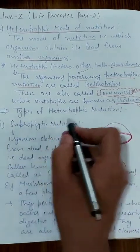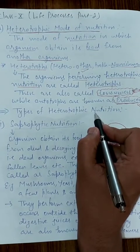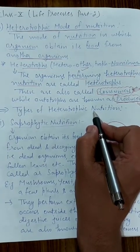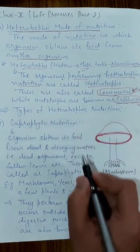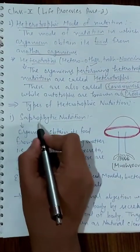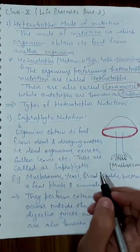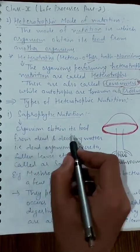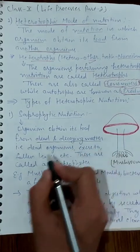Now, types of heterotrophic nutrition. There are no further types in the autotrophic mode of nutrition, but heterotrophic mode of nutrition can be of many types. The first type is saprophytic nutrition.